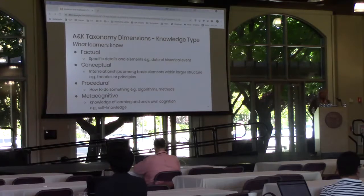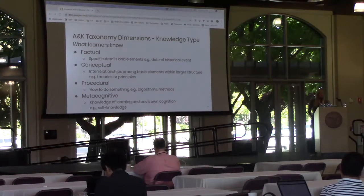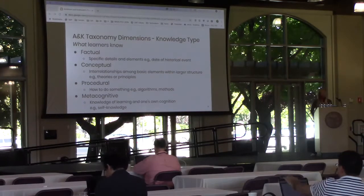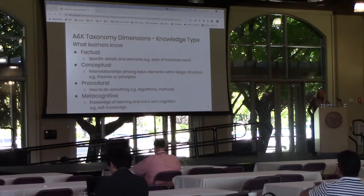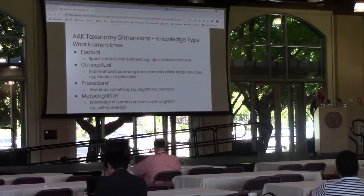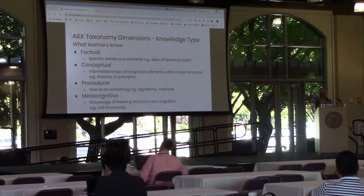Finally, the metacognitive knowledge type involves knowledge of cognition in general as well as awareness and knowledge of one's own cognition. Examples of metacognitive knowledge include self-knowledge, or a learner understanding how much he or she knows at any given time.